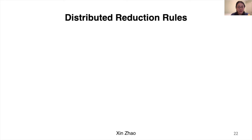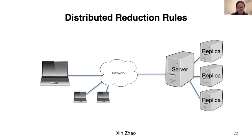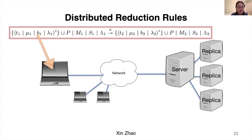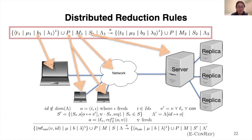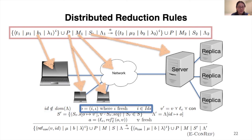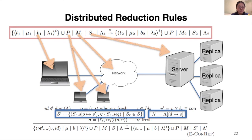For distributed reduction, the configuration considers the whole system: a set of clients with their local configurations, M as an abstraction for the network, S representing the server side with a set of replicas, and a global Λ mapping identifiers to physical locations. For creating a consistent reference, the identifier must be unique, a distributed abstract location is created internally, and to simplify semantics we abstract from the distributed consensus protocol — so once reduction finishes, all replicas are updated in one step with the same state.